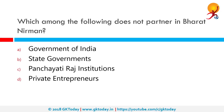Which among the following does not partner in Bharat Nirman? Bharat Nirman is a time-bound plan for rural infrastructure by the Government of India in partnership with state governments and Panchayati Raj institutions. It was launched in 2005 and has six components: water, roads, electricity, housing, irrigation, and telephone connectivity. Private entrepreneurs do not take part in it.